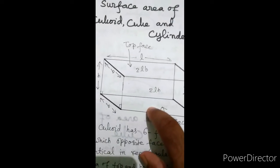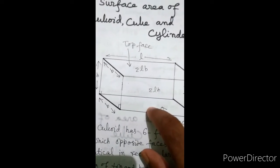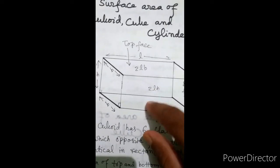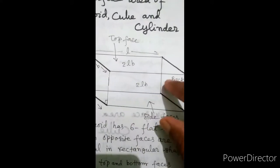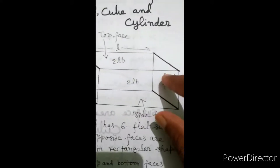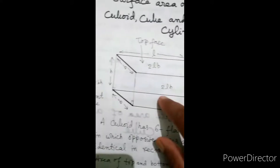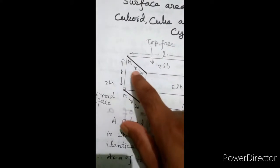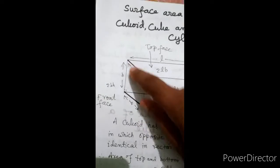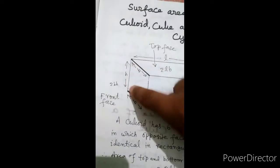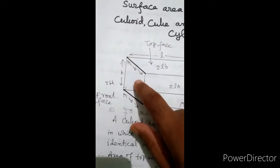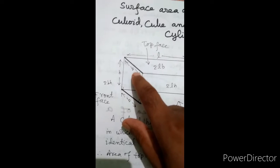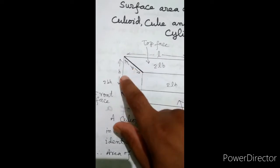In this way, the area of both top and bottom parts will be LB plus LB, that is 2LB. Now, this face has sides B and H, and it is also a rectangle, so its area will be BH.